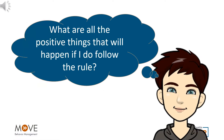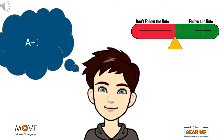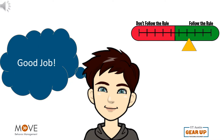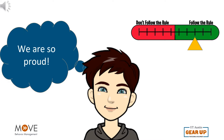Billy asks himself: what are all the positive things that will happen if I do follow the rule? I will get a good grade. I will get a reward. My teacher will give me attention. My parents will approve.